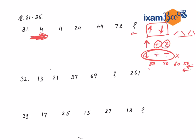By merely looking at the question, we should be able to know whether it is addition or multiplication. If the number is increasing slowly — 1 digit, 2 digit, 2 digit — then it will be plus. If the number is increasing very quickly — 2 digit, 3 digit, 4 digit, 5 digit — then it will be multiplication. If you remember these two things, it would be really easy.